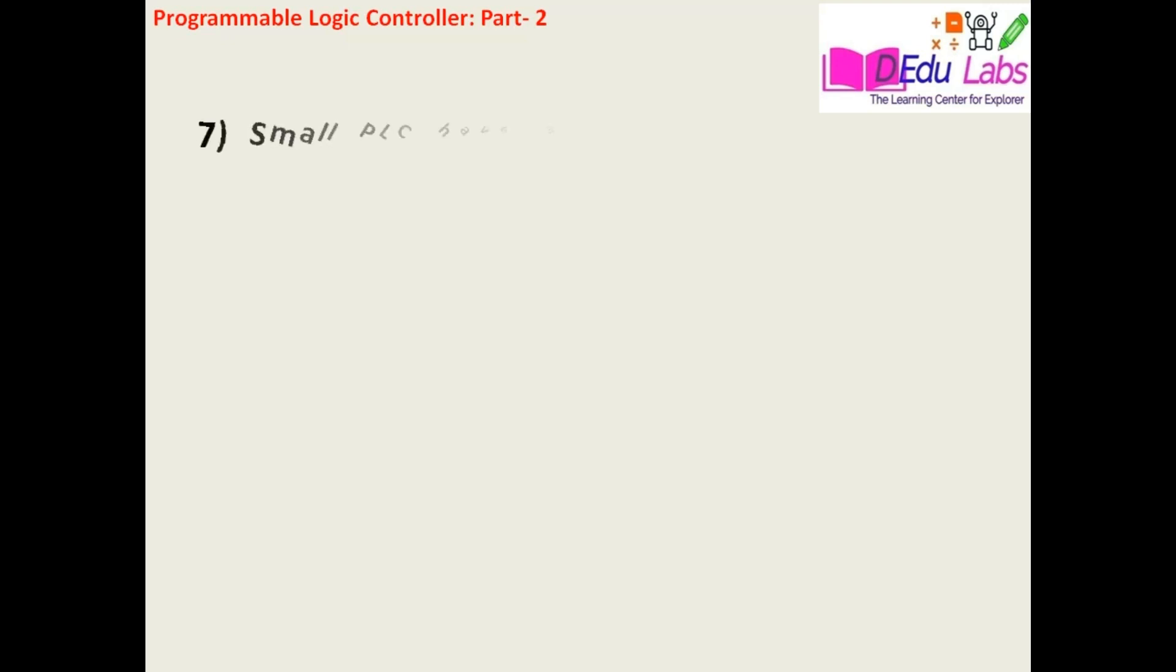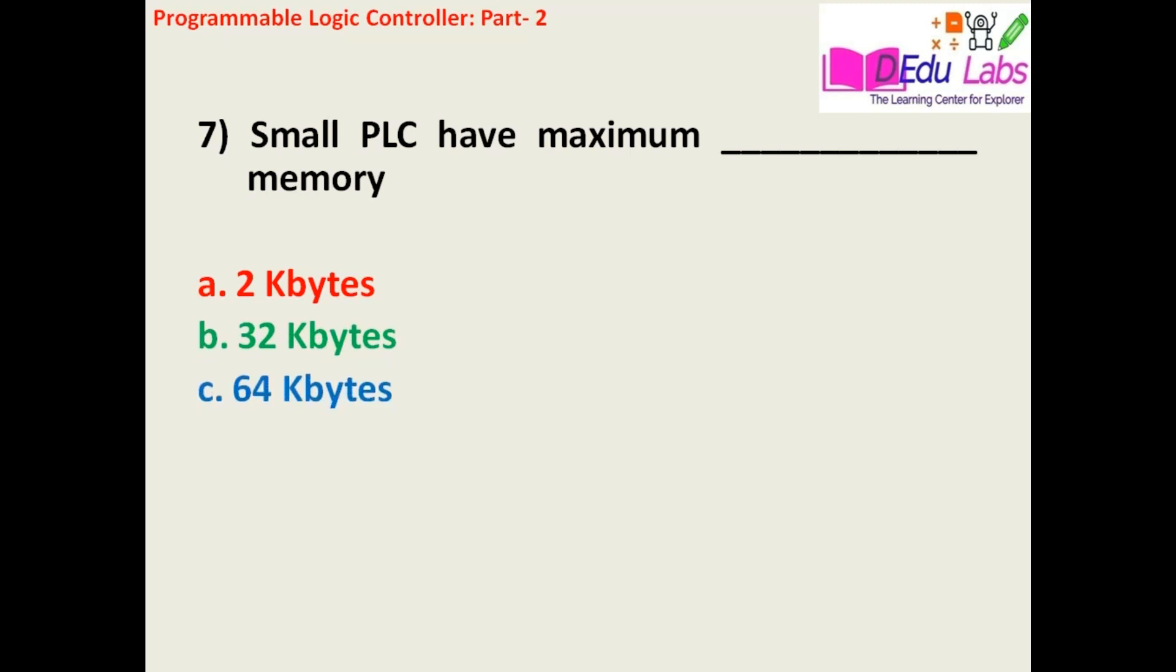Question number seven: Small PLC have maximum blank memory. Option A: 2 kilobytes, Option B: 32 kilobytes, Option C: 64 kilobytes, Option D: 200 kilobytes.